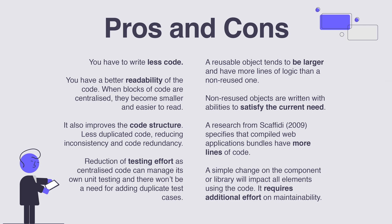As with everything in life, there are also cons. For example, a reusable object tends to be larger than a non-reusable one. This is because reusable objects need to be able to react to multiple situations, whereas non-reusable objects are written with the ability to satisfy only the current need. Also, a simple change to a component or library will have an impact on all elements that are using it.